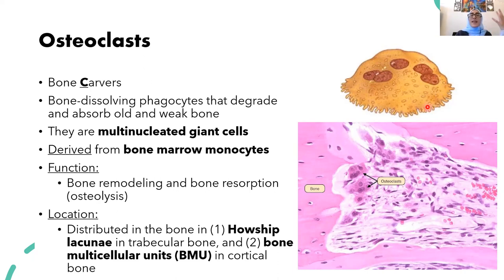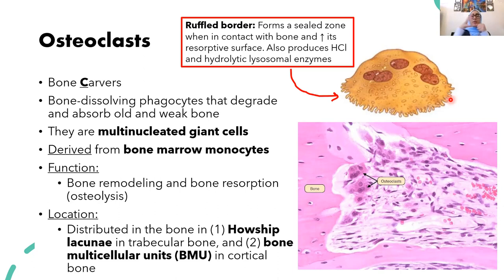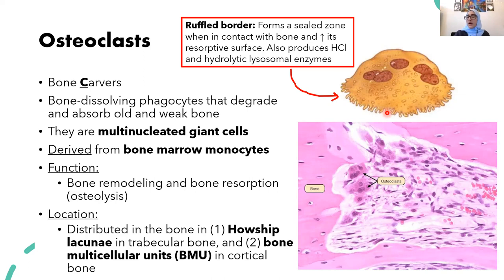Osteoclasts are multi-nucleated and very large cells. They have ruffled edges — a frill-like border — which is important because it gives them extra surface area to resorb bone. The ruffles allow the osteoclast to sit on top of the bone and create a sealed zone where it can secrete acid and enzymes to perform bone resorption. From this ruffled border, acid is produced along with hydrolytic lysosomal enzymes — the acid dissolves the inorganic components and the lysosomal enzymes digest the collagen.